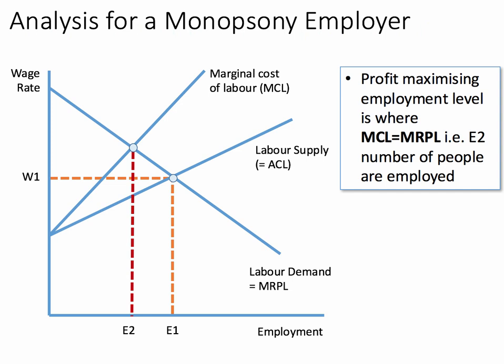So the profit-maximising level of employment is where the marginal cost of labour, MCL, intersects with marginal revenue product, as shown by the labour demand curve. And in our diagram, this is an employment level E2.